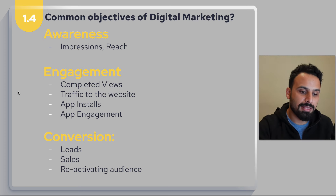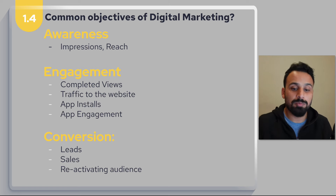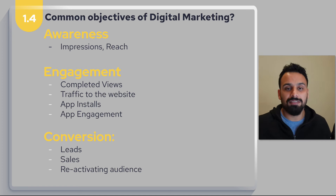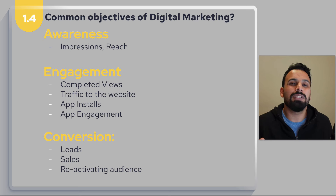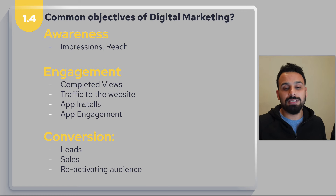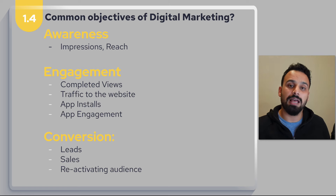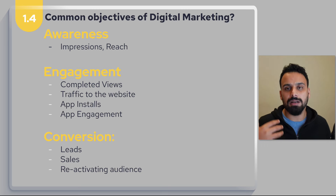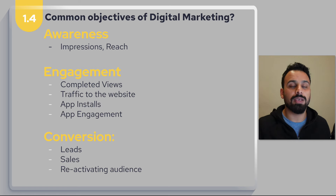Now let's cover the last subtopic in this section: common objectives in digital marketing. I want you to understand the basic objectives companies have when investing in digital marketing, with real-life examples. Whatever you do digital marketing for — any company or yourself — what do companies actually want? Their objectives can be broken down into three sections: awareness, engagement, and conversion.